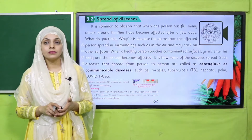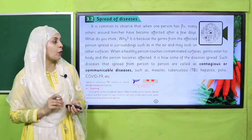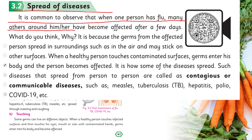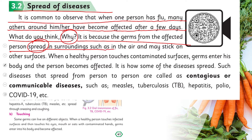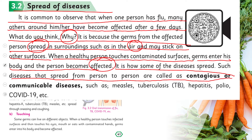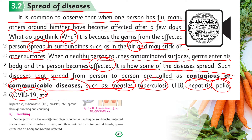Spread of Diseases: It is common to observe that when one person has flu, many others around him or her become affected after a few days. The germs from the affected person spread in the surroundings — in the air — and may stick on other surfaces. When a healthy person touches contaminated surfaces, germs enter his body and the person becomes affected. Diseases that spread from person to person are called contagious or communicable diseases, such as measles, tuberculosis, hepatitis, polio, and COVID-19.